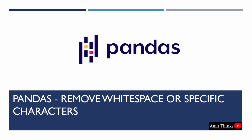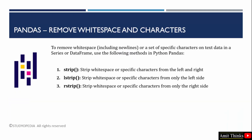In this lesson, we will learn how to remove whitespace or specific characters from text data in a pandas Series or DataFrame. We have three built-in methods provided by Python pandas. If you want to strip whitespace or specific characters including newline from the left and right of a string, use the strip method. If you only want to strip from the left, use lstrip. And if you want to strip from the right side, use rstrip.